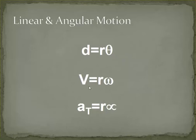Okay, it is valid for velocity. Linear velocity V is equal to the radius times omega, which is the angular velocity.